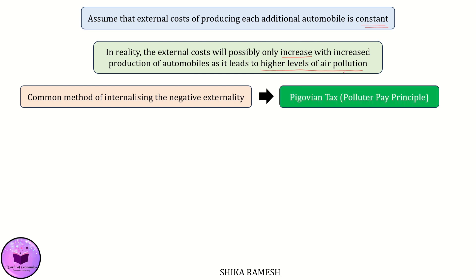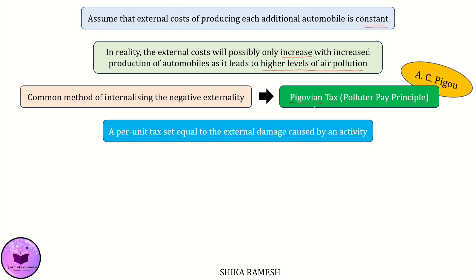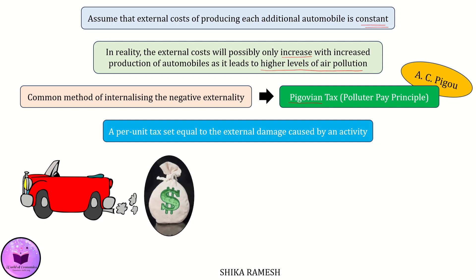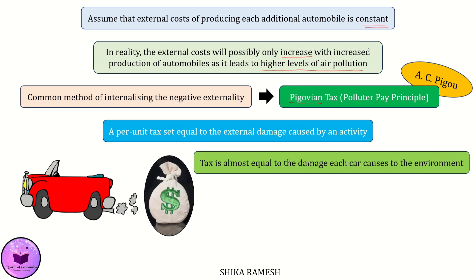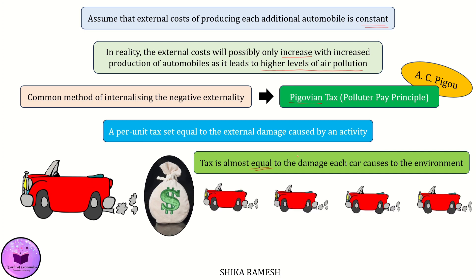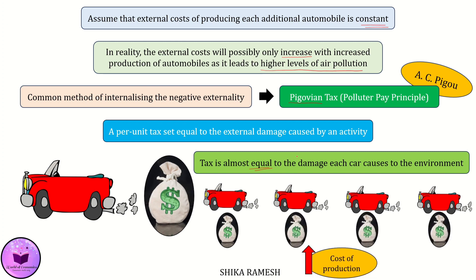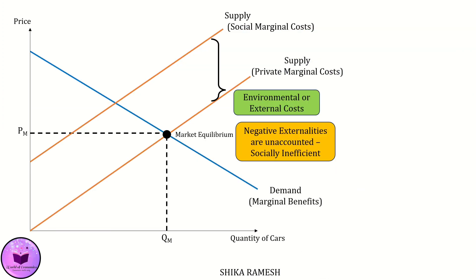The most common method to internalize a negative externality is through imposing taxes. This is known as the Pigouvian tax, or the polluter pays principle, named after Arthur Pigou. It is a per-unit tax set equal to the external damage caused by an activity. Imagine the government imposes a tax on car makers equal to the damage each car causes to the environment — for every new car they make, these companies have to pay extra money as tax, which increases their costs.